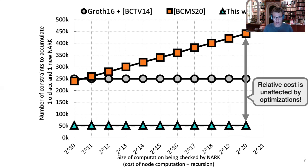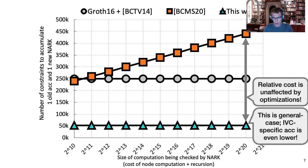We assume any optimizations would move everything down proportionally since everything is implemented using the same library. There is one small optimization: for the specific case of IVC — we implemented it generically for PCD — our scheme has a specialized construction that can do even better, but we did not implement it.